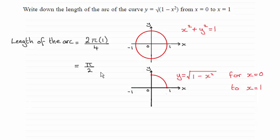And you can see the answer is pi upon 2. How I did this is just by squaring both sides and rearranging, you get x squared plus y squared equals 1, which is a circle centered at the origin with radius 1.